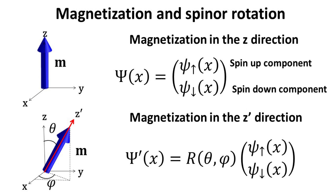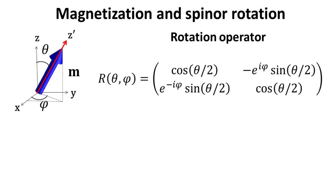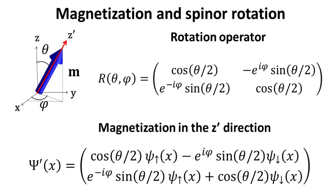For instance, if the magnetization of the ferromagnetic material points along the z' direction, defined by polar angle theta and azimuthal angle phi in relation to the original z-axis, the new spinor describing up and down spins along z' is obtained by applying the rotation operator R(theta, phi). We explicitly write the rotation operator in its matrix representation. Applying this rotation operator to the spinor wave function in the unrotated z quantization axis yields the spinor wave function corresponding to the rotated z' spin quantization axis.